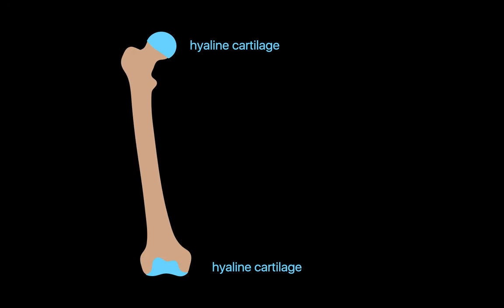The surfaces where the epiphyses contact another bone are covered by a layer of hyaline cartilage, which reduces wear and tear by providing a smooth, low-friction surface that allows bones to glide smoothly against each other during movement. The hyaline cartilage also absorbs and helps distribute mechanical loads more uniformly across the surface of the entire epiphysis.